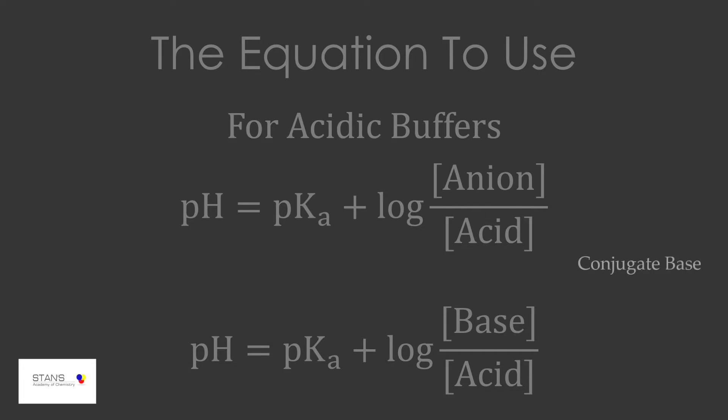Here when I refer to anion or base, I refer to the strong conjugate bases that actually affect the pH. The conjugate base is a negative ion, or it's also a base, based on the Bronsted-Lowry theory of acids and bases.